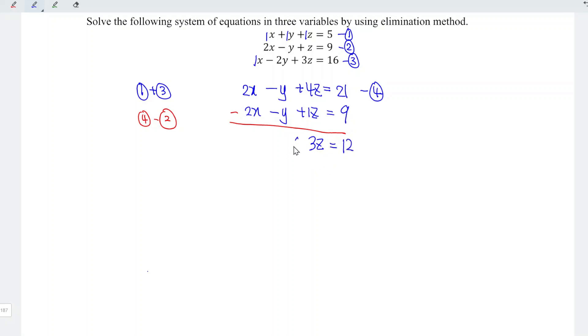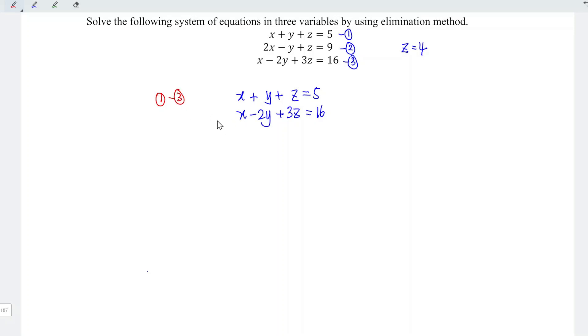In other words, when we divide the equation by 3, we should obtain z is equal to 12 divided by 3, which is equal to 4. Since we have obtained the value for z, we can now proceed to obtain the values for x and y. I'm going to take equation 1 minus equation 3 for this time.